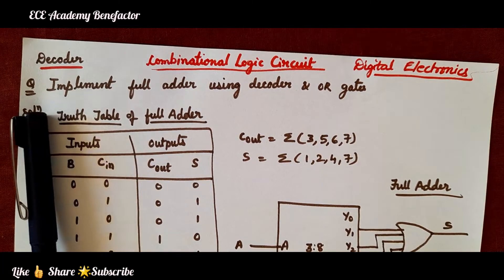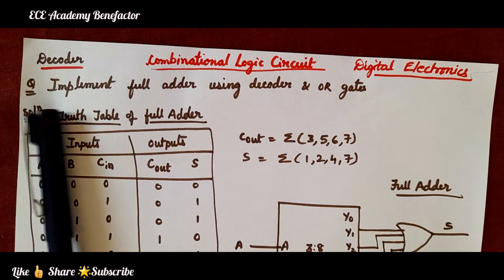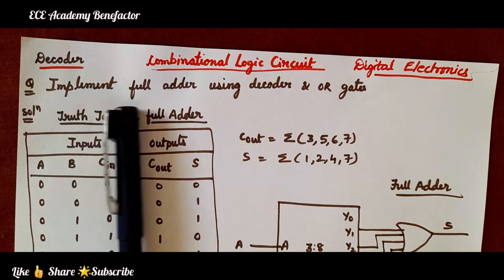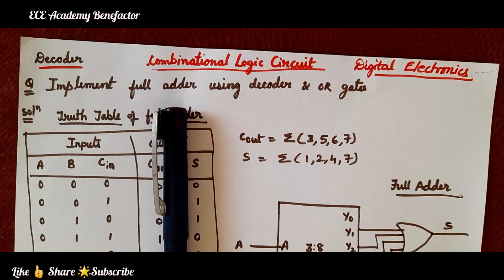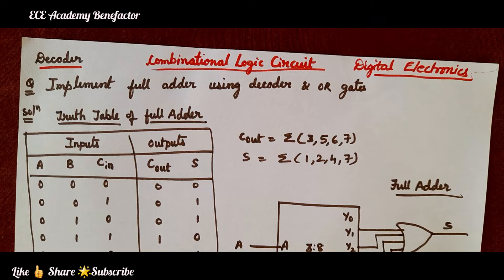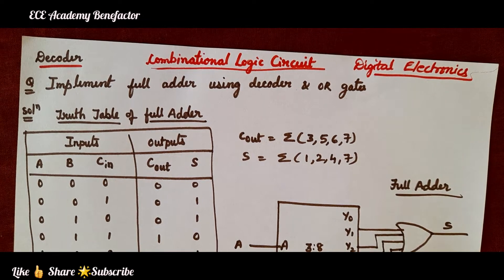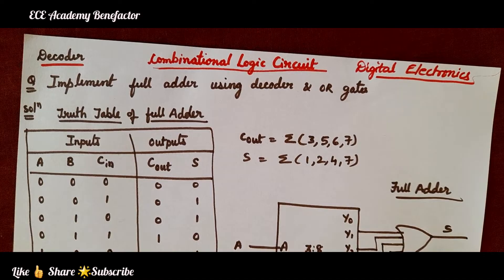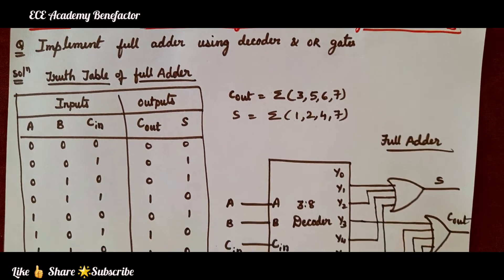Coming to the problem, the given question is: implement a full adder using decoder and OR gates. To implement the full adder using a decoder, you need to write the truth table of the full adder.